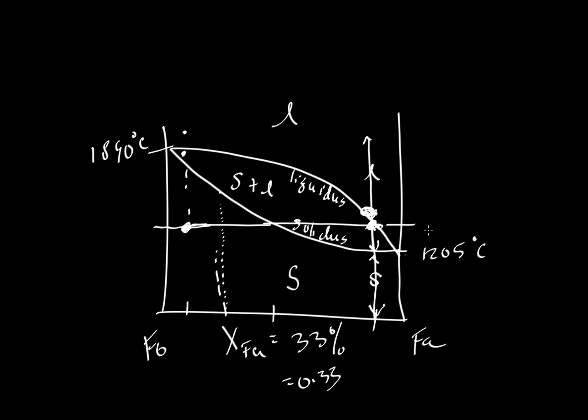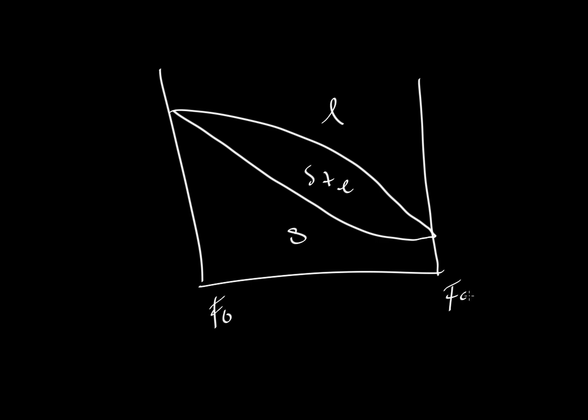So our phase diagram—let's just erase this and redraw it. Here's our phase diagram loop. We have solid, solid plus liquid, and then liquid. It is more or less a map in temperature and composition space that tells us where we should expect to find solids and liquids.